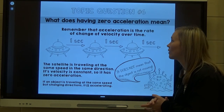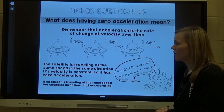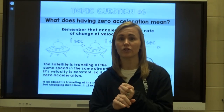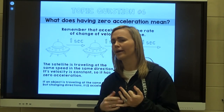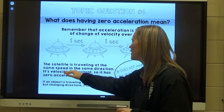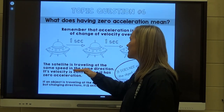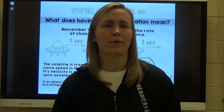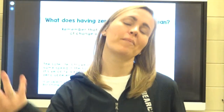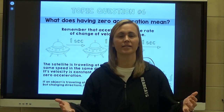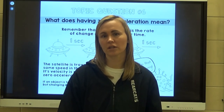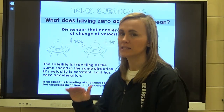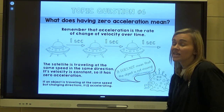What does zero acceleration mean? Remember, acceleration is the rate of change of velocity — speeding up, slowing down, or changing direction. If an object has zero acceleration, its velocity is constant. For example, a satellite traveling the same speed in the same direction has zero acceleration. If you're walking one mile per hour north, you have to continue walking one mile per hour north forever — no turning, no braking — to have zero acceleration. Zero acceleration doesn't mean the object is not moving; it can be moving or not moving.